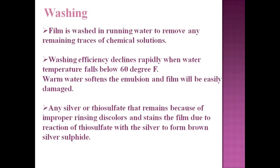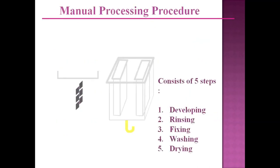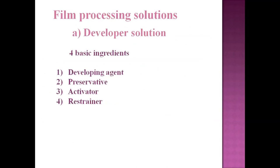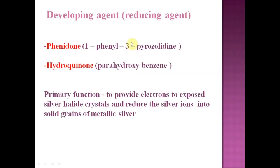So the mini-process is: developing, rinsing, fixing, washing, and drying. Now let's look at each one in detail. The developer solution has four basic ingredients: developing agent, preservative, activator, and restrainer. The developing agent or reducing agent is phenidone (1-phenyl-3-pyrazolidine) and hydroquinone (para-hydroxybenzene). The basic function is to provide electrons to the exposed silver halide crystals and reduce the silver ions to solid grains of metallic silver.